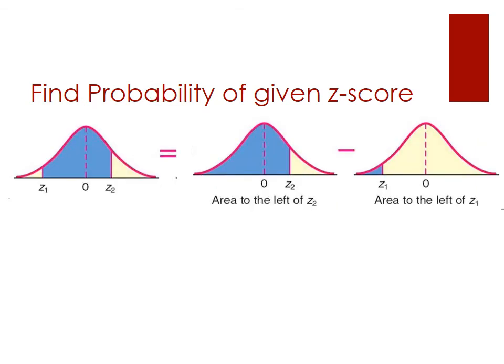To find the probability of the space between any two given Z-scores — Z1 and Z2 — we take the area to the left of Z2 and subtract the area to the left of Z1. The area we're interested in goes from the left all the way up to Z2; however, we're not interested in the area up to Z1, so we subtract that piece off, and the result is the area between Z1 and Z2.